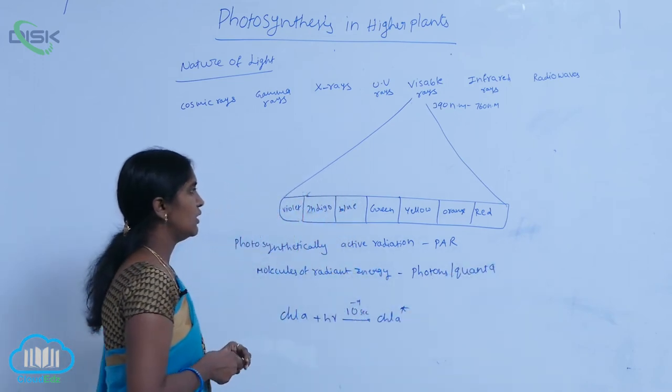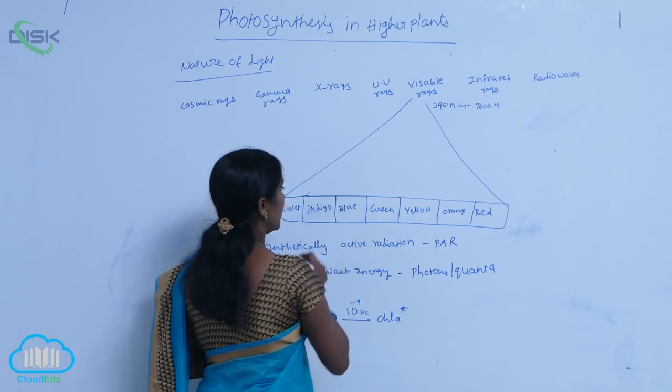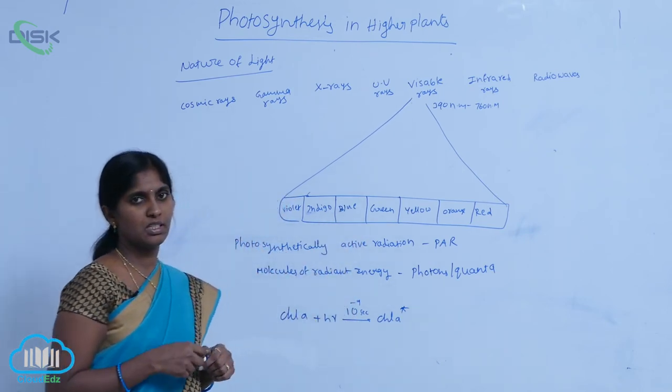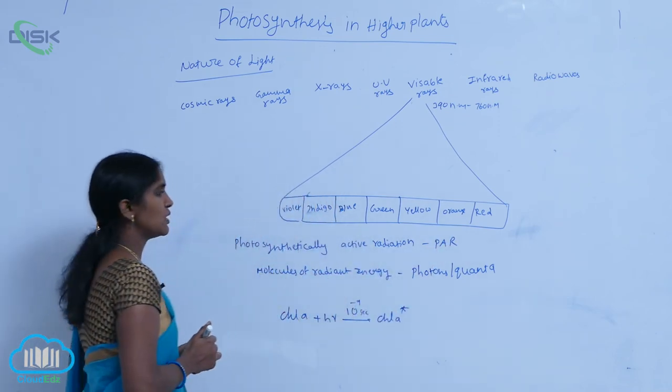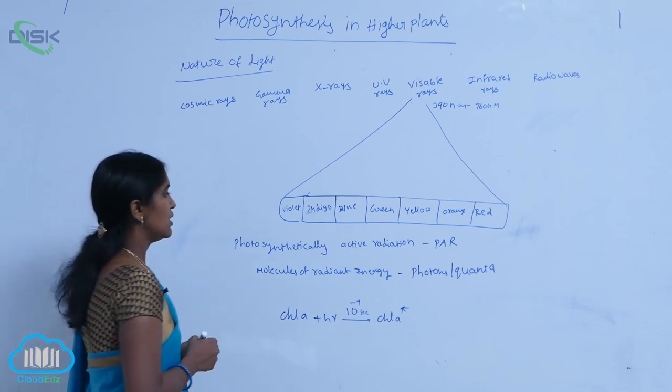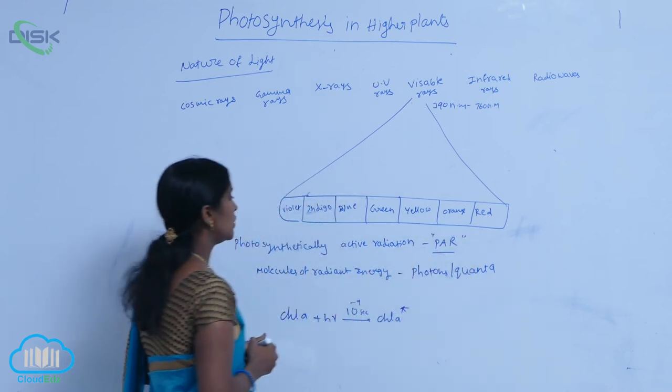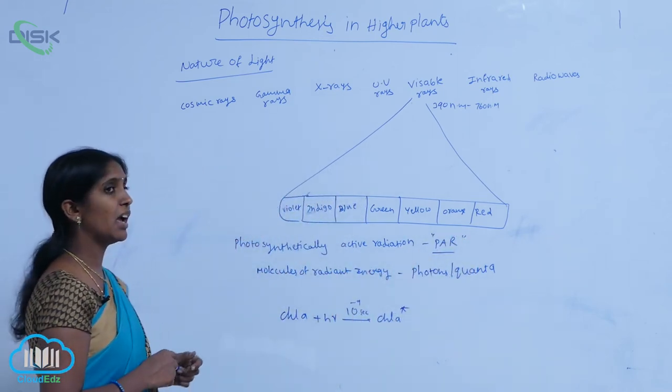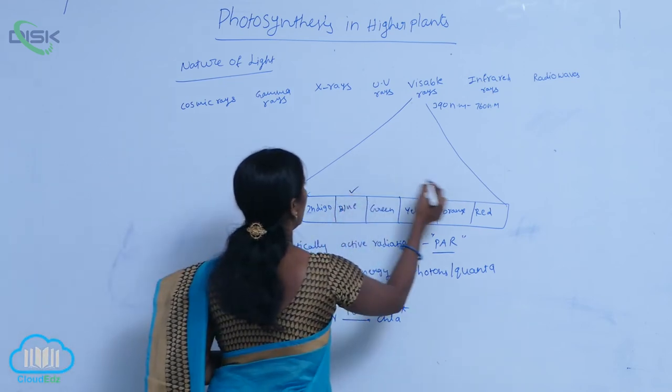The red and blue lights are effective for photosynthesis. That is why the red and blue lights are considered as photosynthetically active radiation. They are called PAR - photosynthetically active radiations. They are blue and red.